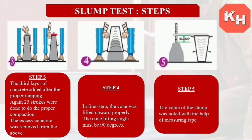Step 5: The slump value is noted with the help of a measuring tape after removing the cone. We check this value using the measuring tape — the difference between the top of the cone and the top of the slumped concrete is the exact slump value.